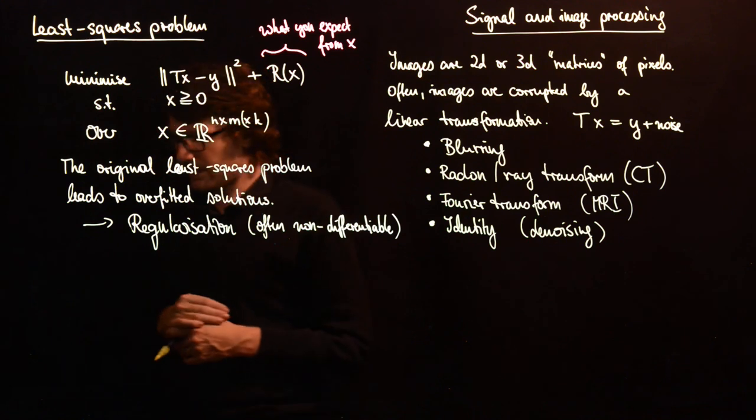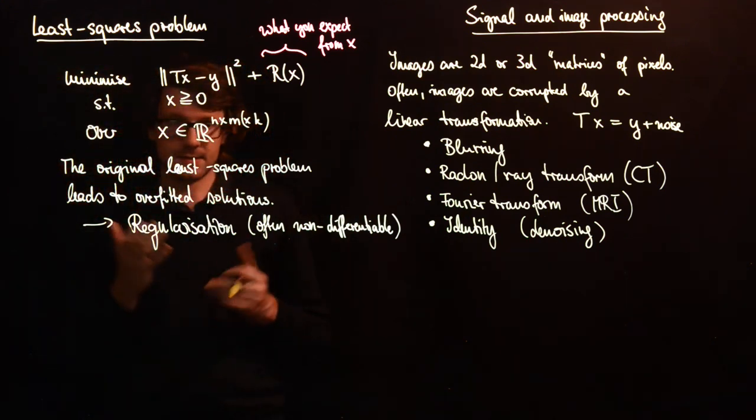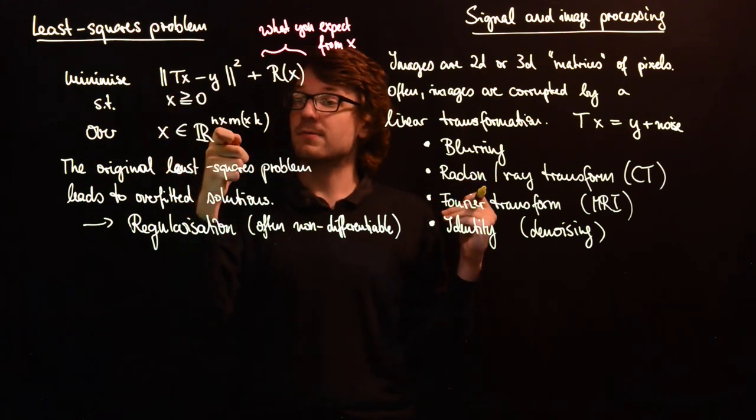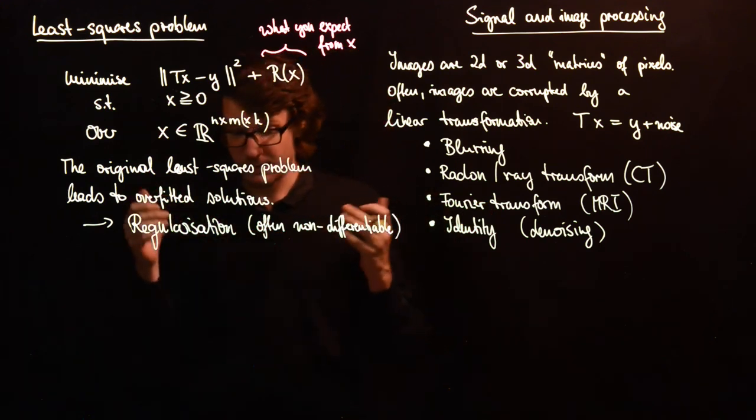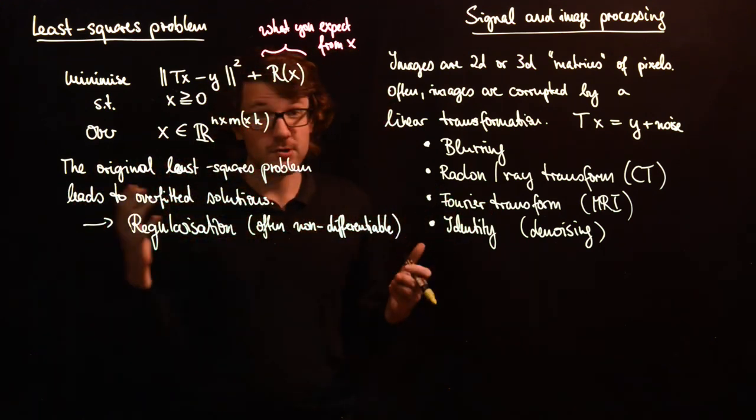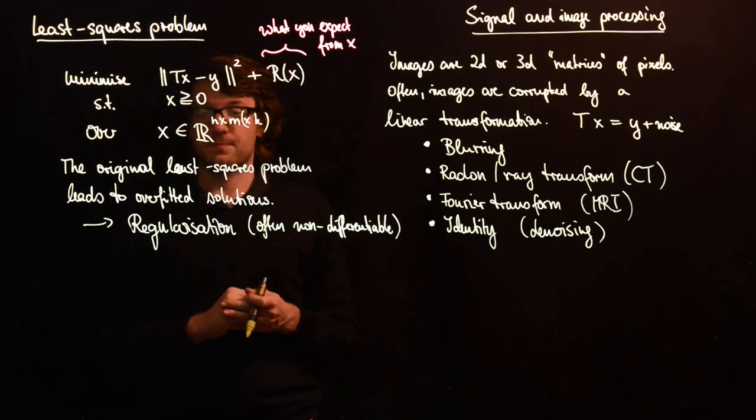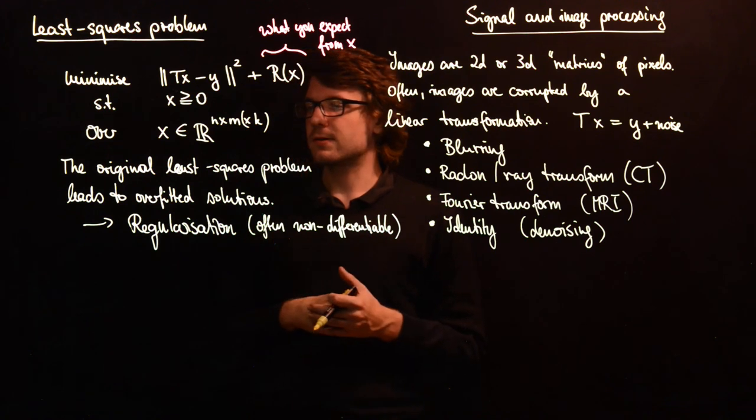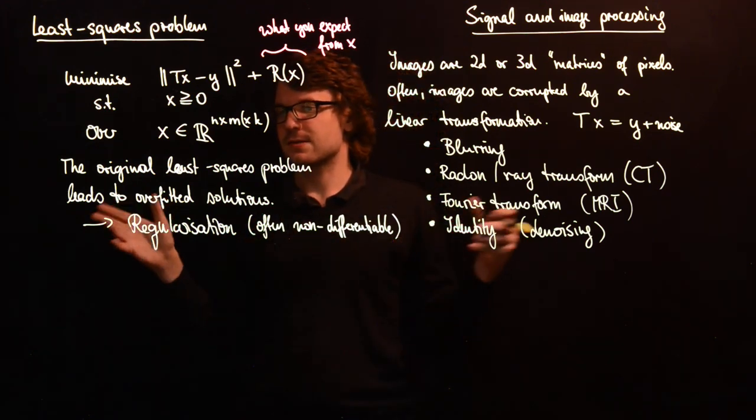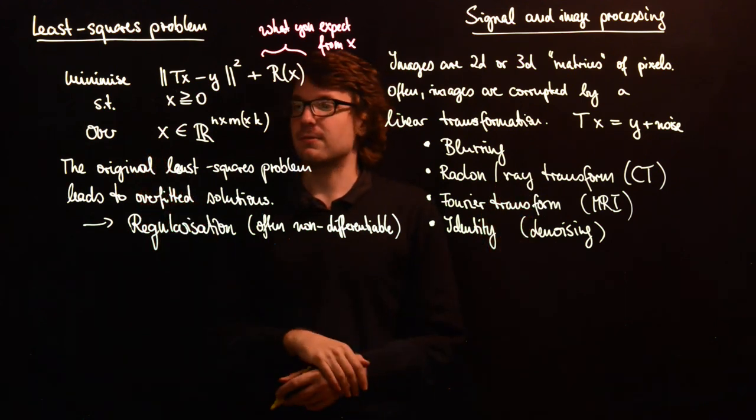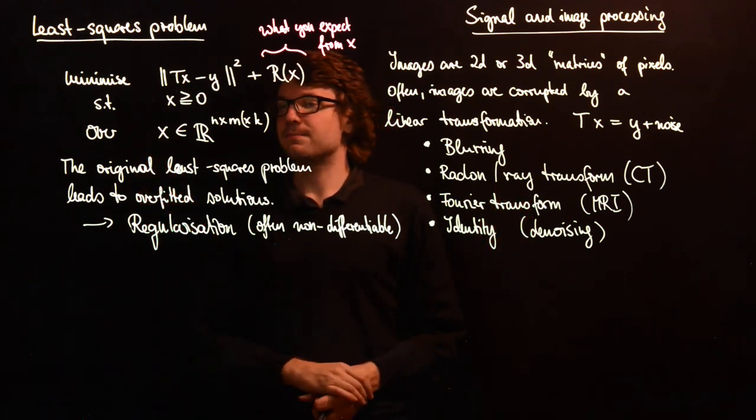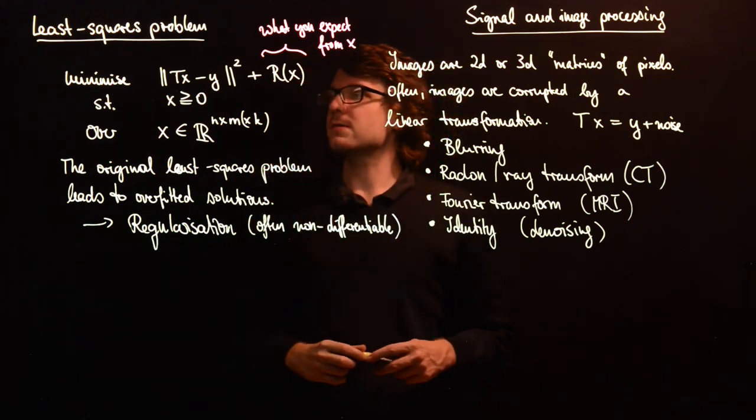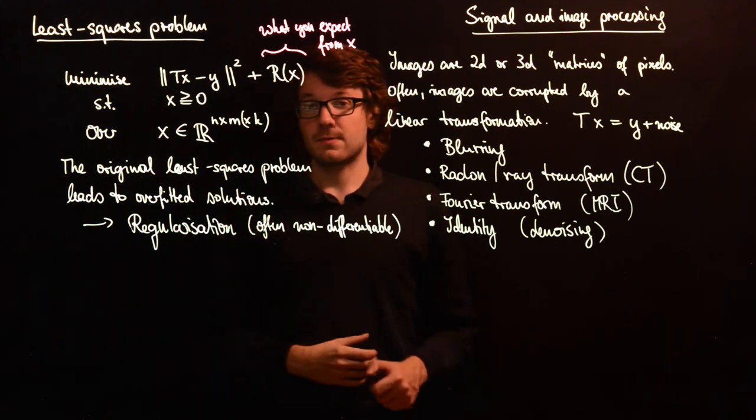Like this you get optimization problems with n times m times k, and if you have a high resolution image or a video or a three-dimensional image then this might be a large quantity, so that you cannot just take any derivative of arbitrary order and solve this problem. This is one example for large-scale convex optimization problems.